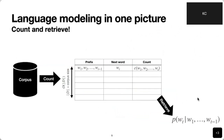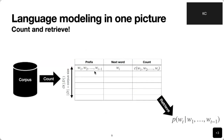Once we build this table, at test time we do retrieval every time we need to compute a next-word prediction probability. We retrieve based on the conditioning prefix to get the normalization constant — the sum of all counts corresponding to that prefix — and divide the count of the prefix followed by the specific word we want. That gives us our maximum likelihood estimate of the next word probability. Once you think about this, it's surprisingly straightforward.